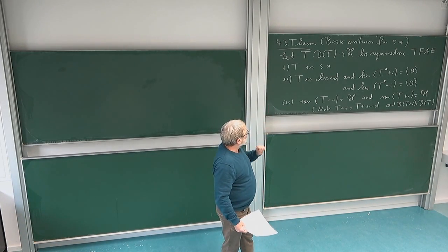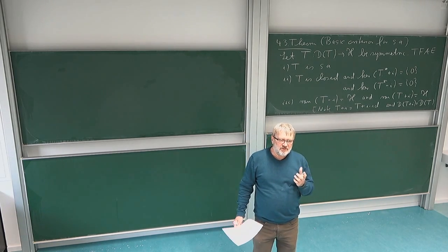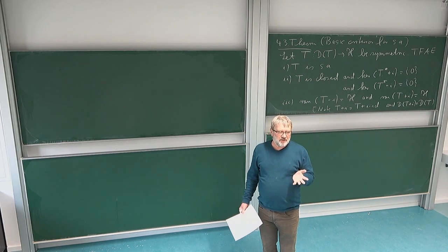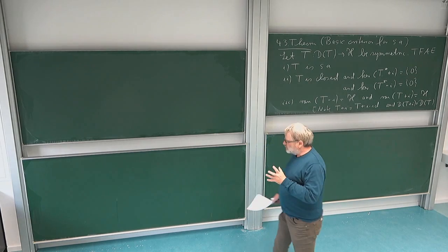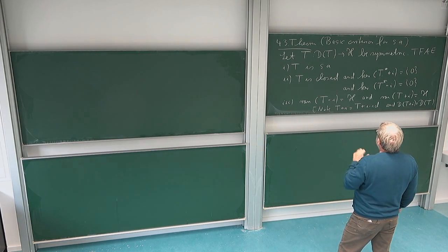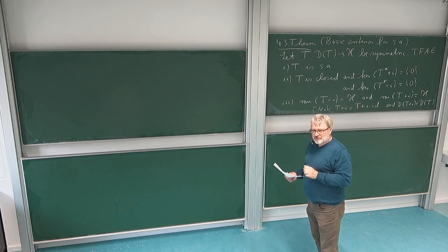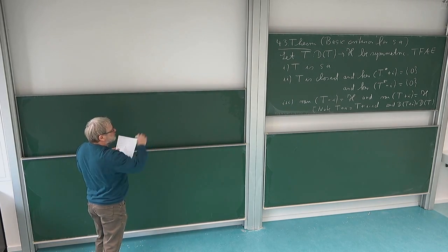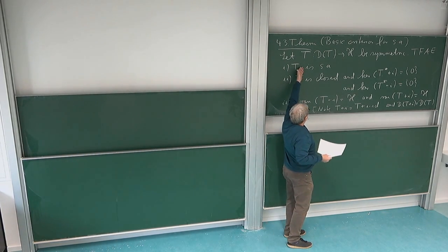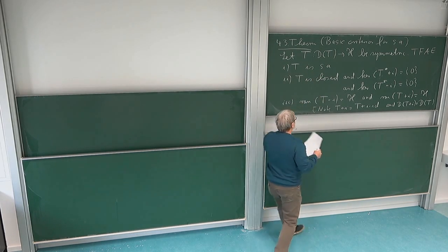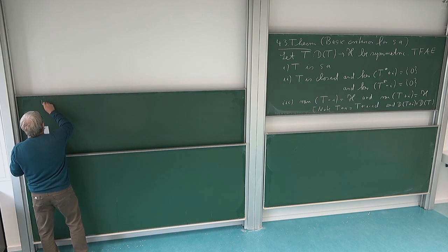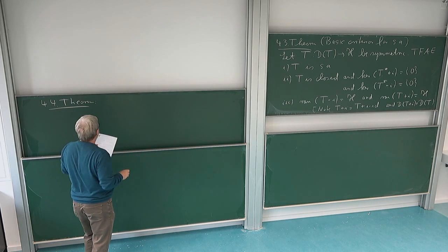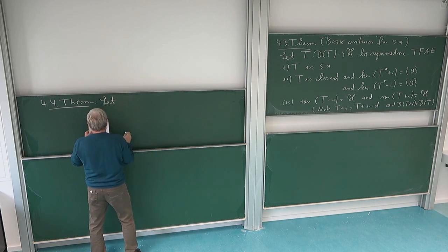We have here a nice criterion for deciding when an operator is self-adjoint, but maybe in most cases we have essentially self-adjoint operators and we want to deal with them. It would be good to rewrite this in a form which also talks about essentially self-adjoint operators. One can do this, and this follows more or less from what we have, so I'm not going into the proof, but just write it down.